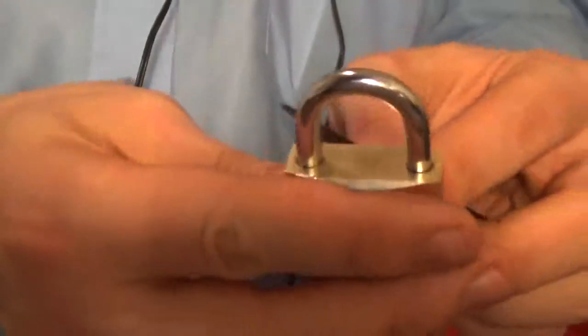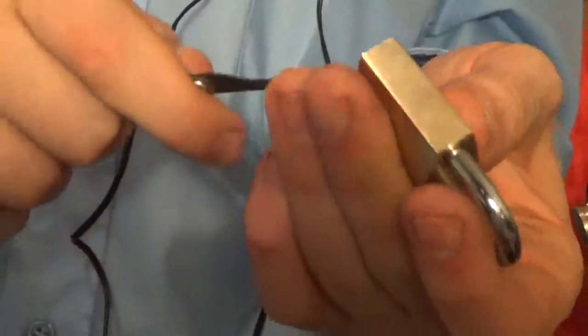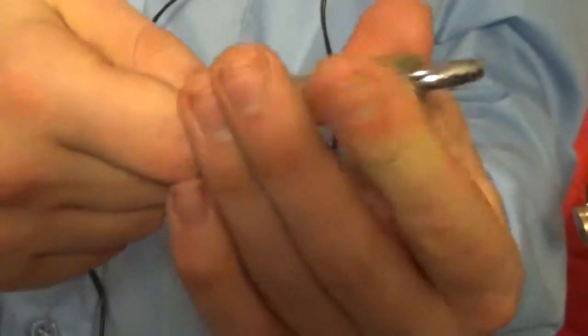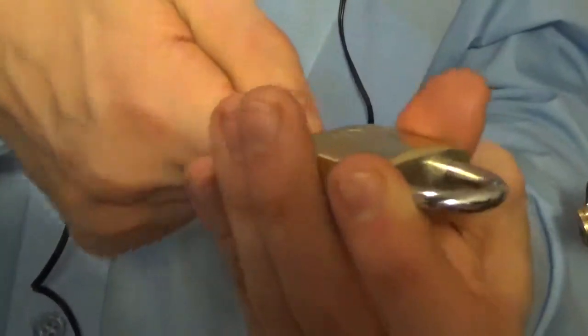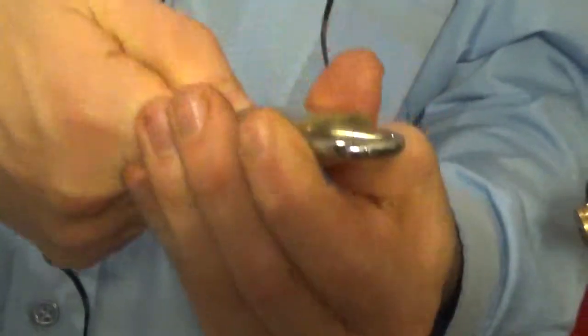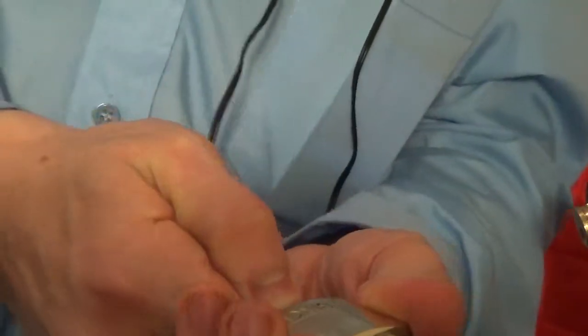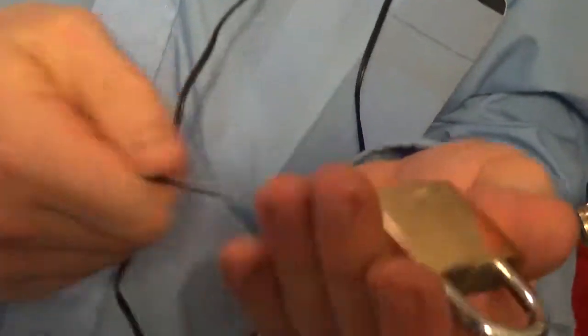And I want to see if it locks on both sides like it shows on the shackle. So, we'll test that out and see if it's shielded or not. Okay. Yeah, I'd say that's probably locks on both sides. So, that's good.